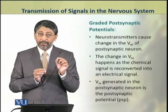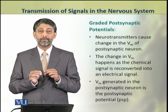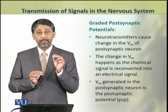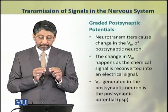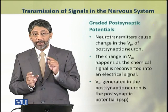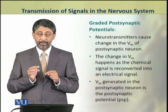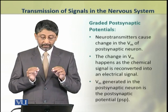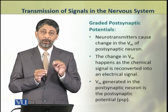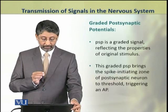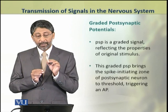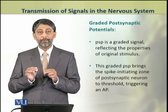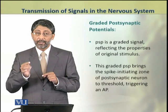When the neurotransmitter reaches the next neuron — that is the postsynaptic neuron — it causes a potential change in the postsynaptic cell. The chemical signal is converted back into an electrical signal. This membrane potential generated in the postsynaptic neuron is known as postsynaptic potential. The postsynaptic potential produces a graded signal that reflects the properties of the original stimulus which initiated this whole process.